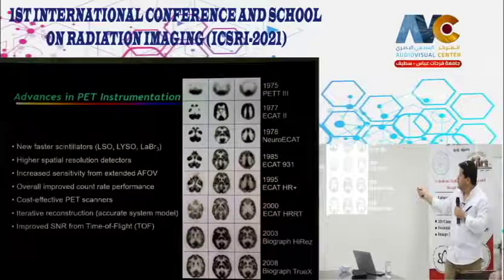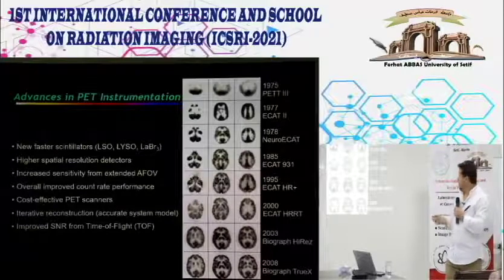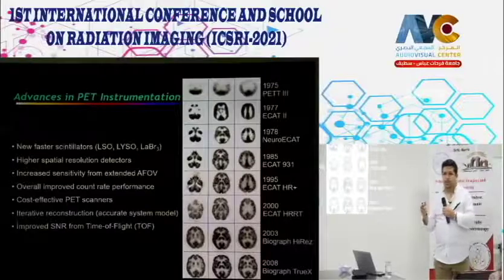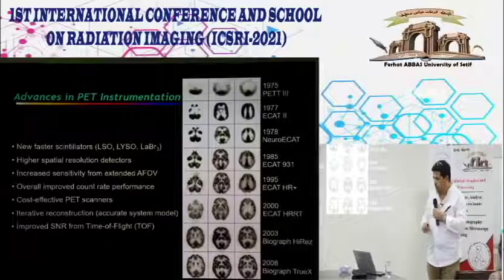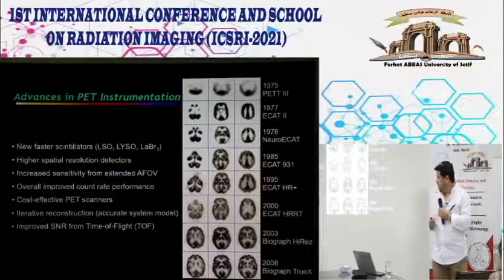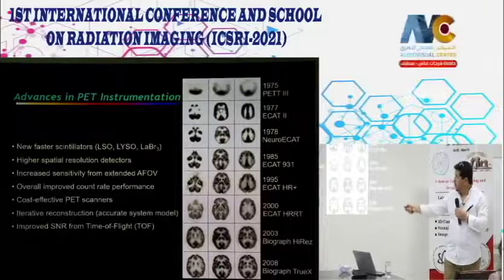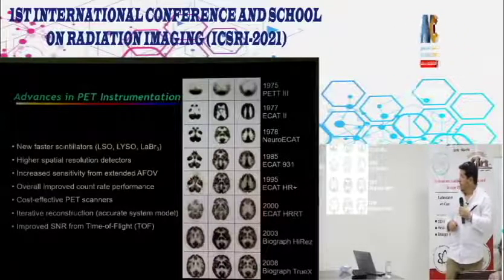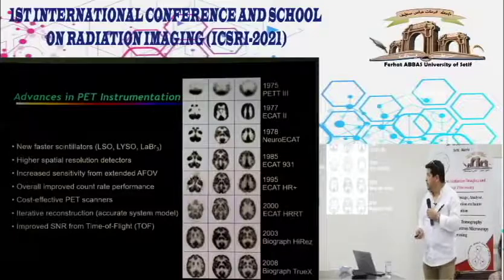The evolution of PET image quality: the 1970s systems had pixel sizes close to 1 cm (very low spatial resolution). Now spatial resolution is approximately 2–2.5 mm, achieved through improved scintillation crystals with higher stopping power, fast electronics, and advanced reconstruction techniques.